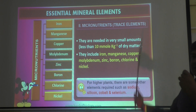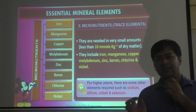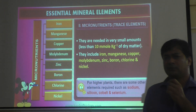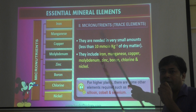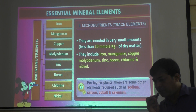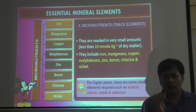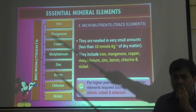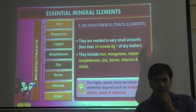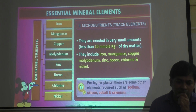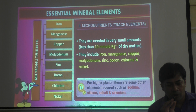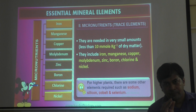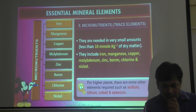Micronutrients are also called trace elements — trace means very, very small quantity. Plants require less than 10 millimoles per kg of dry matter of these elements. If the plant requires more than 10 millimoles per kg, it is macro; less than this, it is micronutrients. The micronutrients are iron, manganese, copper, molybdenum, zinc, boron, chlorine, and nickel.